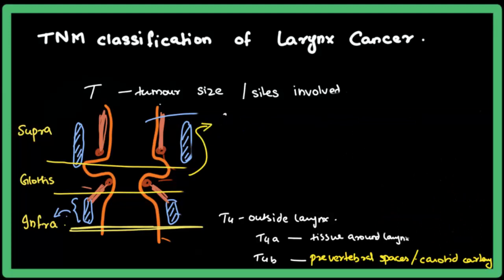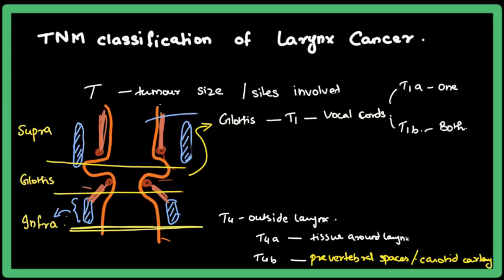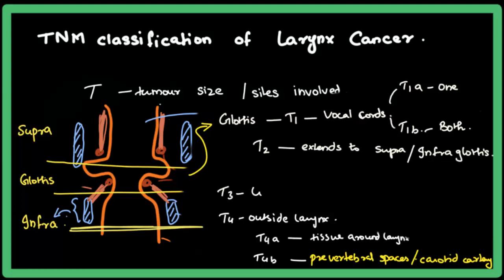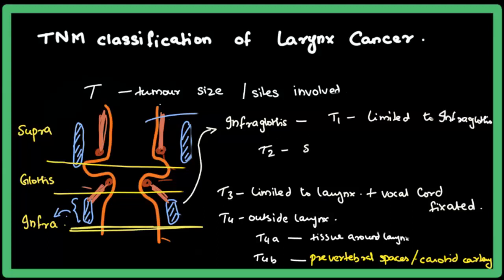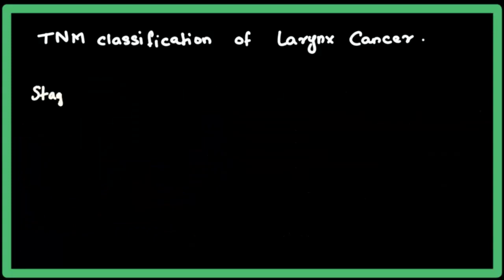For a glottic tumor: T1a means one vocal cord is involved, T1b means both vocal cords are involved; T2 means it extends to the infraglottis or supraglottis; T3 means it is limited to the larynx with vocal cord fixation. For an infraglottic tumor: T1 means it is limited to the infraglottis; T2 means it has spread to the supraglottis or glottis. T3 and T4 definitions are the same across all subsites.